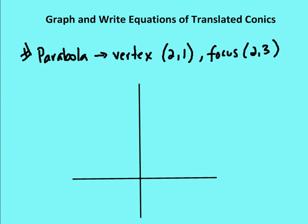In the next example, number 8, I write an equation for a parabola with a vertex of (2, 1) and a focus of (2, 3). I plot the vertex at (2, 1) and the focus at (2, 3). Since the focus is always inside the parabola and is above the vertex, I know the graph faces up.